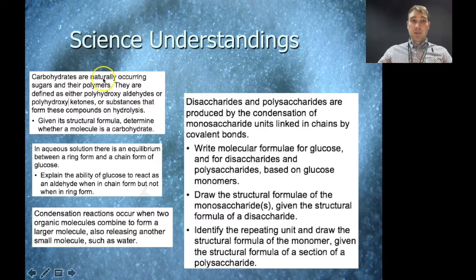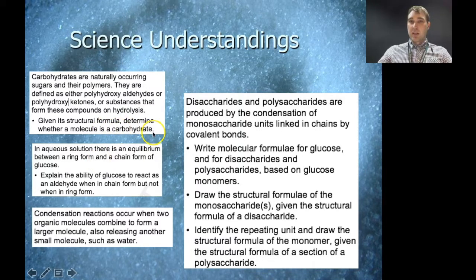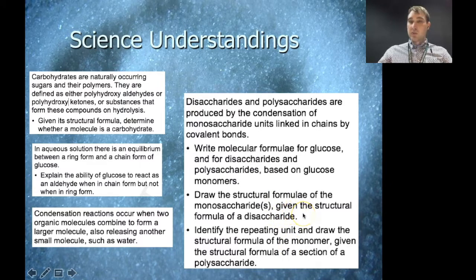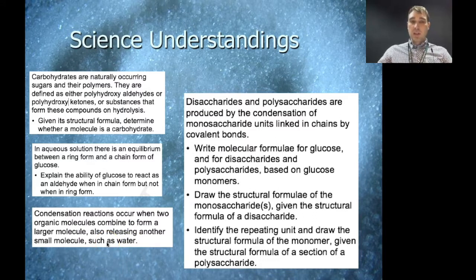The science understandings we're going to look at: Carbohydrates are naturally occurring sugars and their polymers. They're polyhydroxy aldehydes or ketones, or substances that make them on hydrolysis. We'll look at how to use a structural formula to determine whether something is a carbohydrate. Disaccharides and polysaccharides are produced by the condensation of monosaccharides. A condensation reaction is when two organic molecules react and a small molecule, usually water, comes out.